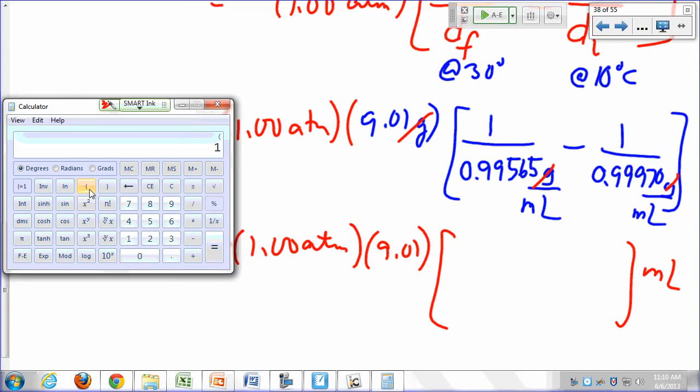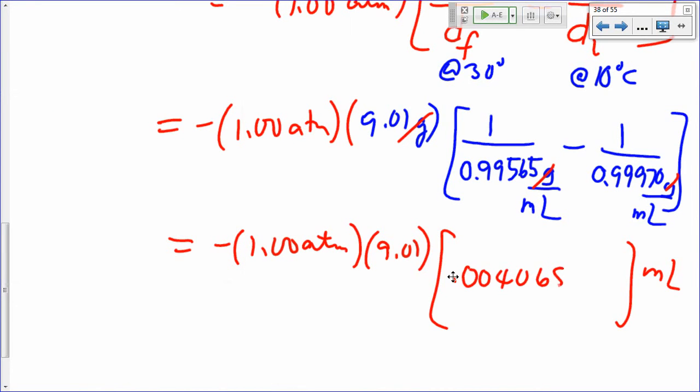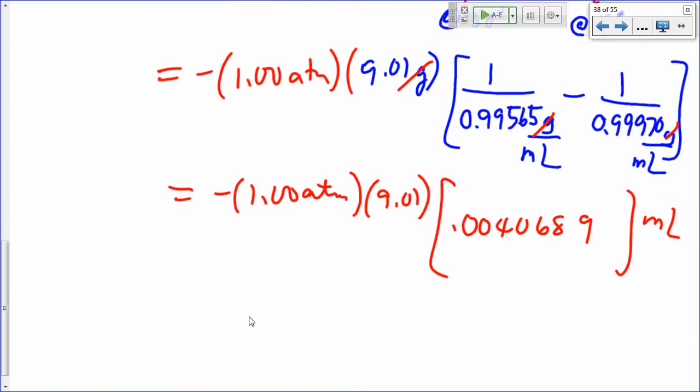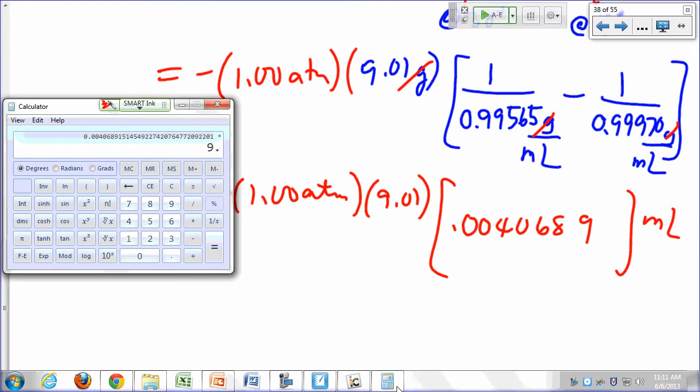Here we go. 1 divided by .99565, close parenthesis, minus open parenthesis, 1 divided by .99970. So that is 0.0040689 milliliters. It's a very small change in volume.